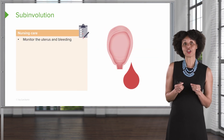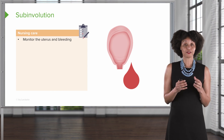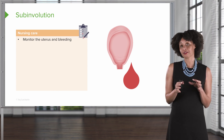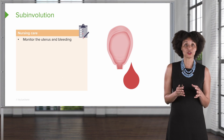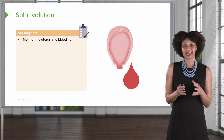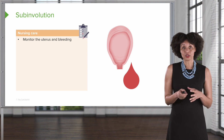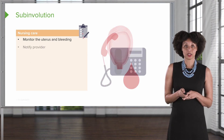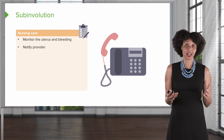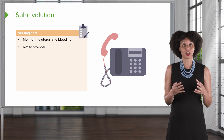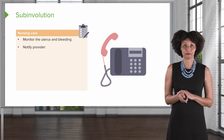Thinking about what the nurse needs to do for a patient experiencing subinvolution: because of the possibility of hemorrhage, monitoring the uterus and bleeding is important — does it feel boggy, and are we getting lots of lochia when we massage the fundus? We want to notify the provider, because if there's an infection or excessive bleeding, we may need an order to move to the next step.